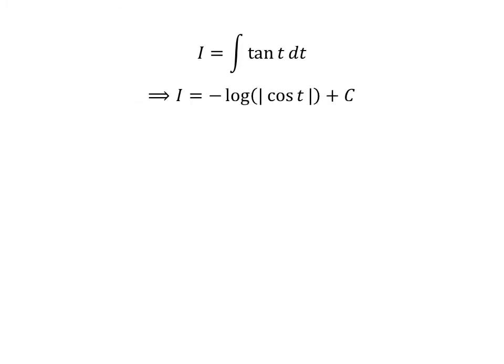The integral of tangent of t is minus natural log of absolute value of cosine of t. The integral of tangent of t has been explained in the video appearing in the upper right corner. The link of the video is also mentioned in the description section. So, i is equal to minus natural log of absolute value of cosine of t plus capital C. Capital C is the arbitrary constant of indefinite integral. Never forget to add this constant.